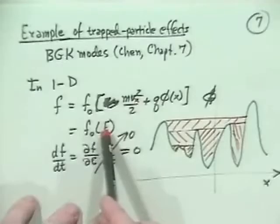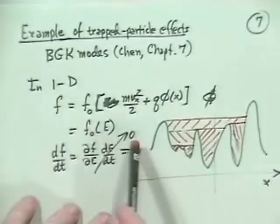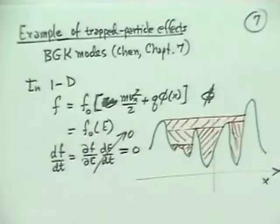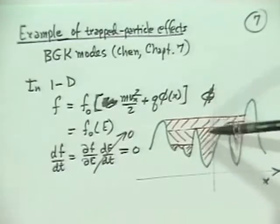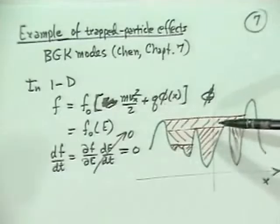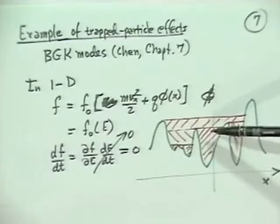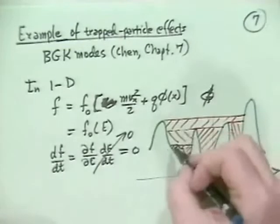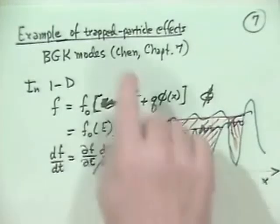You can inject or arrange an arbitrary potential in a plasma — it can be quite irregular — and construct a self-consistent distribution function accounting for all groups of trapped particles in each potential well. Bernstein, Greene, and Kruskal showed mathematically how to construct such functions. However, just a few collisions would mush out the sharp velocity-space boundaries between trapped and untrapped particles, destroying the solution. Also, it's only possible in one dimension.